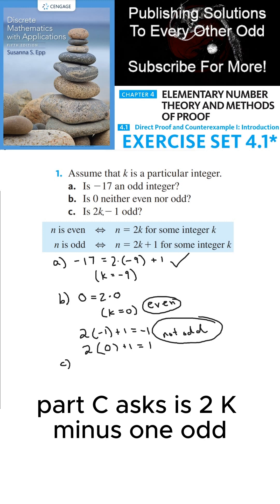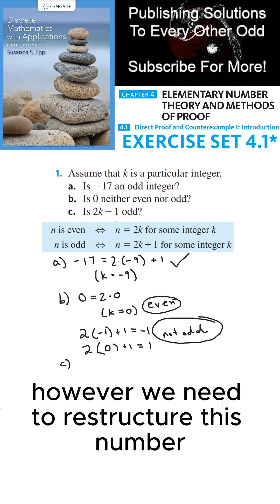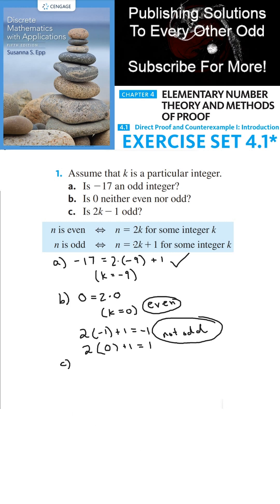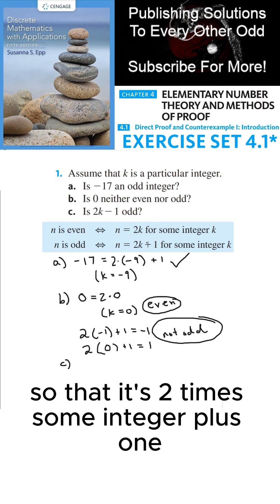Part c asks, is 2k minus 1 odd? The answer is yes. However, we need to restructure this number 2k minus 1 so that it's 2 times some integer plus 1.